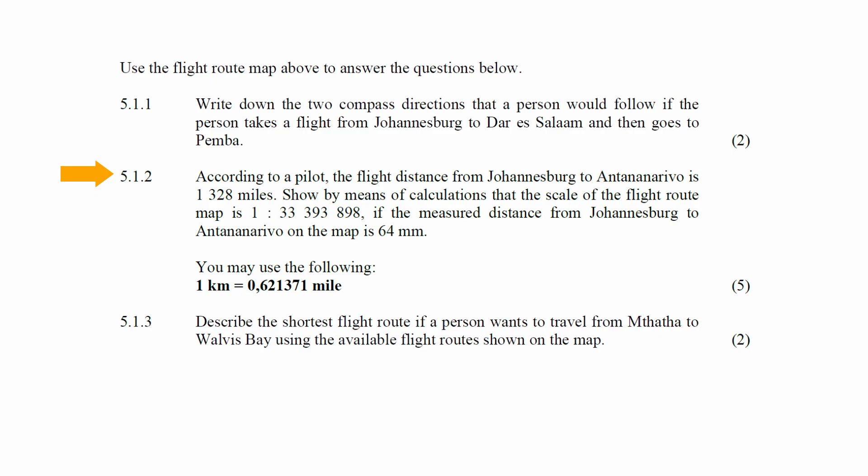In question 5.1.2, according to a pilot, the flight distance from Johannesburg to Antananarivo is 1,328 miles. You will have to show by means of calculation that the scale of the flight route map is 1 to 33,393,898, given that the measured distance from Johannesburg to Antananarivo on the map is 64 millimeters.